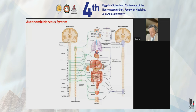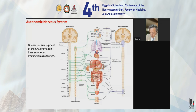Autonomic pathways in the peripheral and central nervous system span the whole body. Any segment of the central or peripheral nervous system can have autonomic dysfunction as a feature, so autonomic dysfunction is ubiquitous in neurologic disease involving any segment of the nervous system.